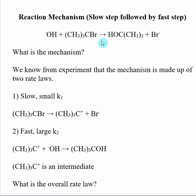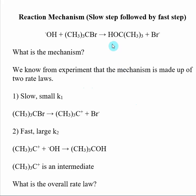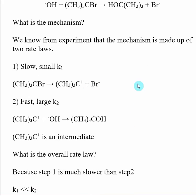When you look at this reaction, it looks like it would happen in one step — that this hydroxide is coming in and pushing the bromine off of the carbon. But it actually happens in two steps. We only know this by looking at the mechanism, and this is something that scientists have done through experiments to determine that this reaction actually goes in two steps.